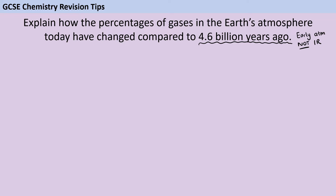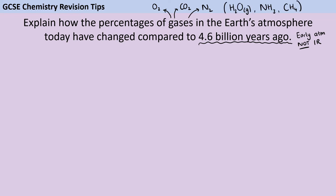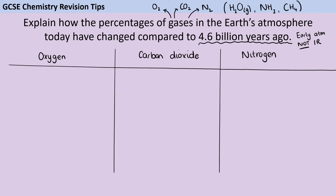The other thing you need to make sure you're doing is talking about a few different gases. The major ones are going to be oxygen, carbon dioxide, and nitrogen. You might also have included some information about water vapour, ammonia, and methane, but these are less important because there's less information you're supposed to know about them. I would suggest laying your answer out in the form of a table, but if you've used bullet points that's absolutely fine as well.